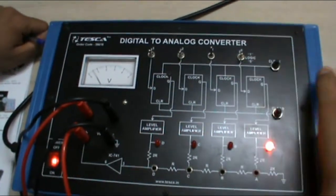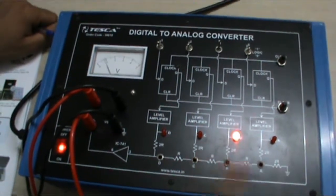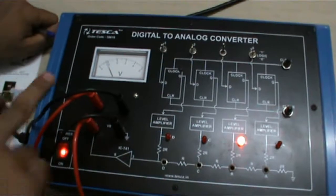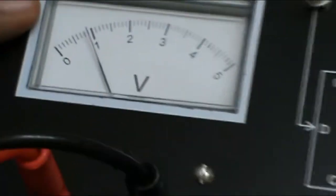Now, if we give input as 2, this shows the input as 2 in binary format 0010. This is the output voltage of 2.